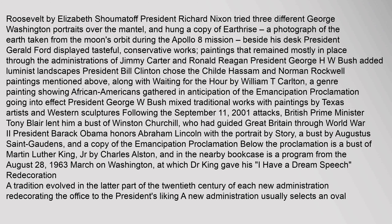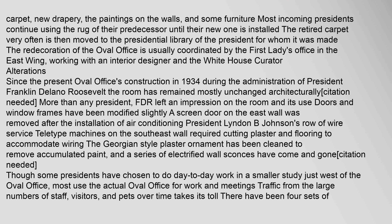A tradition evolved in the latter part of the 20th century of each new administration redecorating the office to the President's liking. A new administration usually selects an oval carpet, new drapery, the paintings on the walls, and some furniture. Most incoming presidents continue using the rug of their predecessor until their new one is installed. The retired carpet very often is then moved to the Presidential Library of the President for whom it was made. The redecoration of the Oval Office is usually coordinated by the First Lady's office in the East Wing, working with an interior designer and the White House curator.